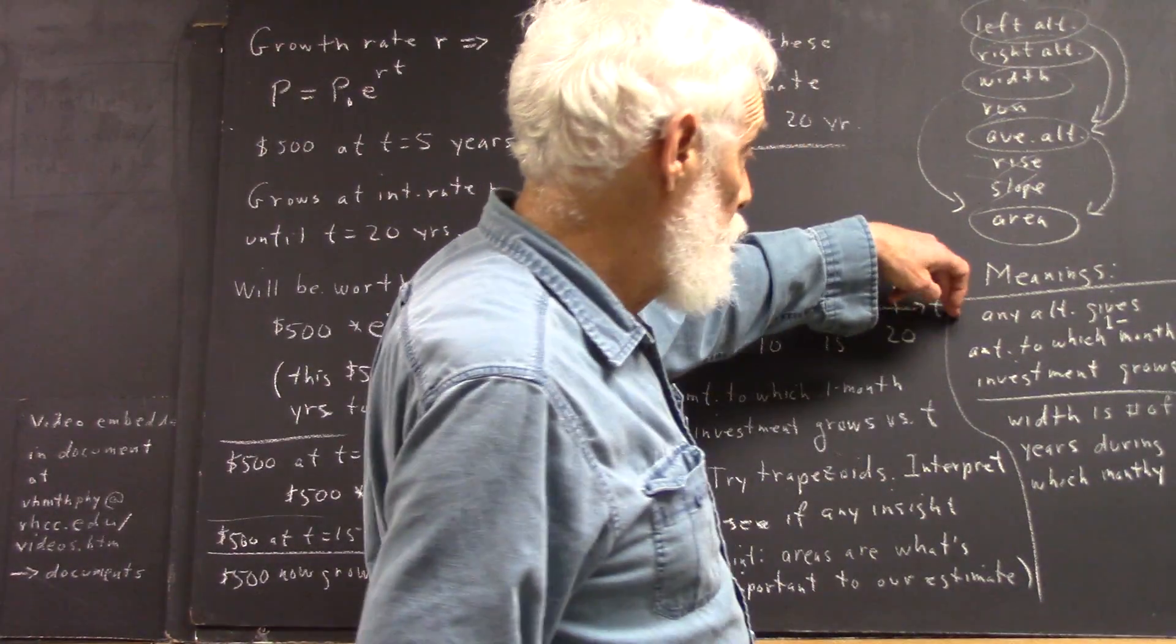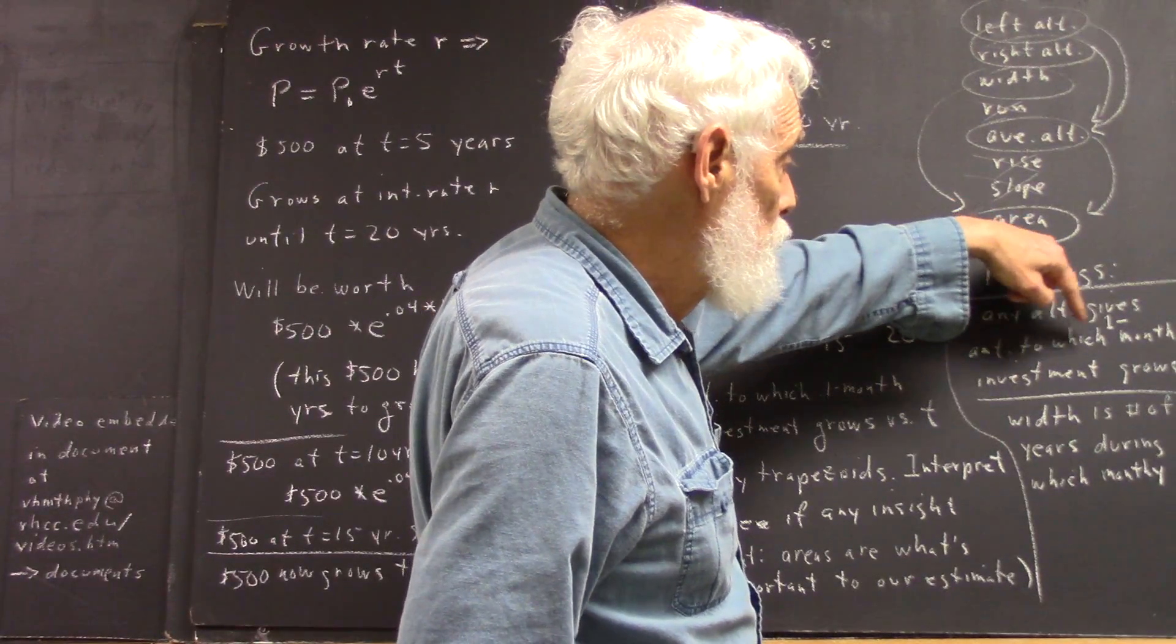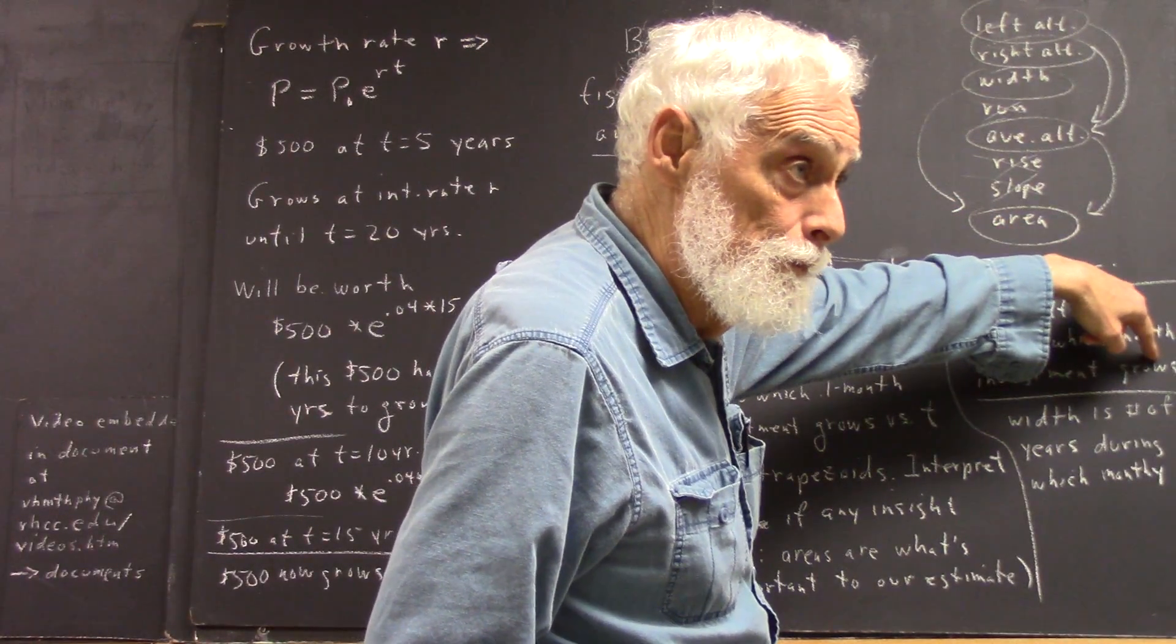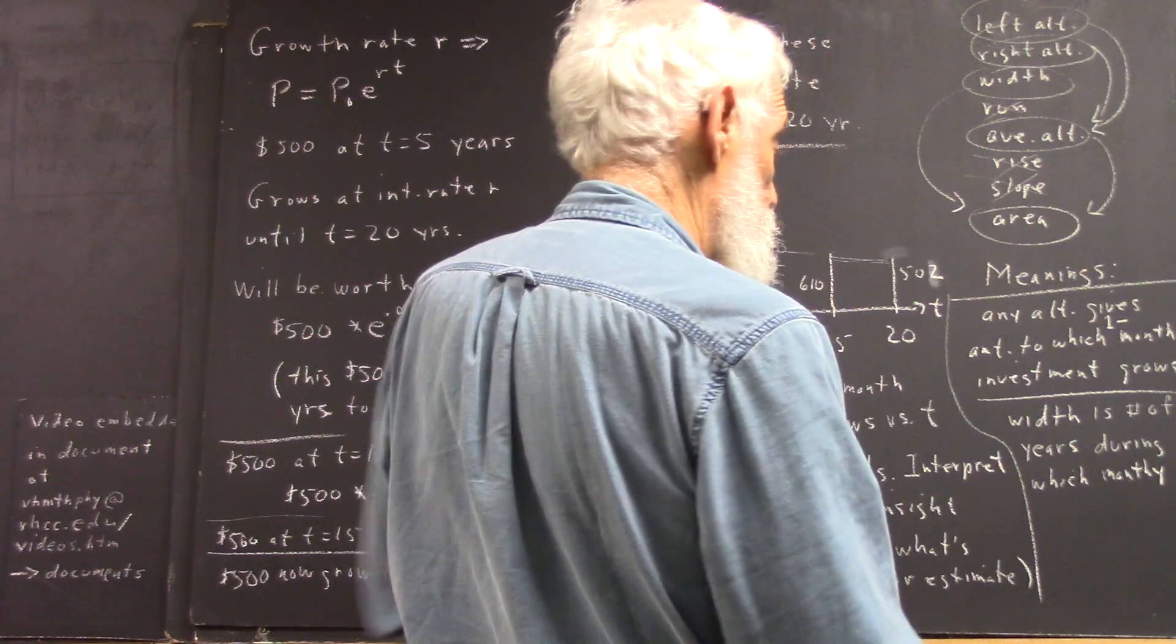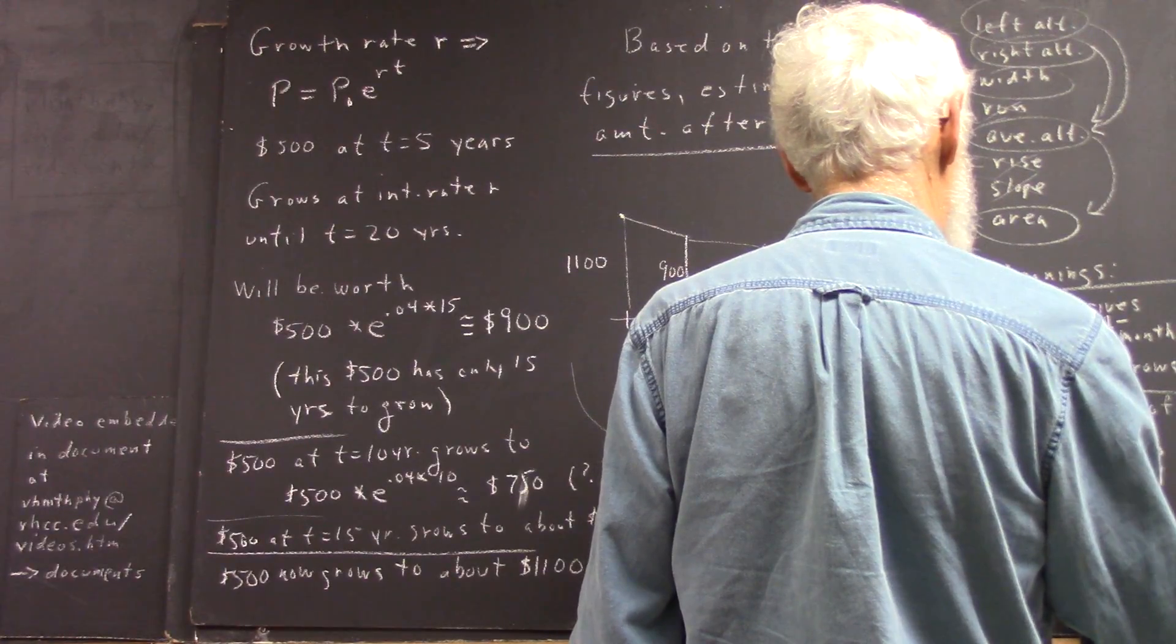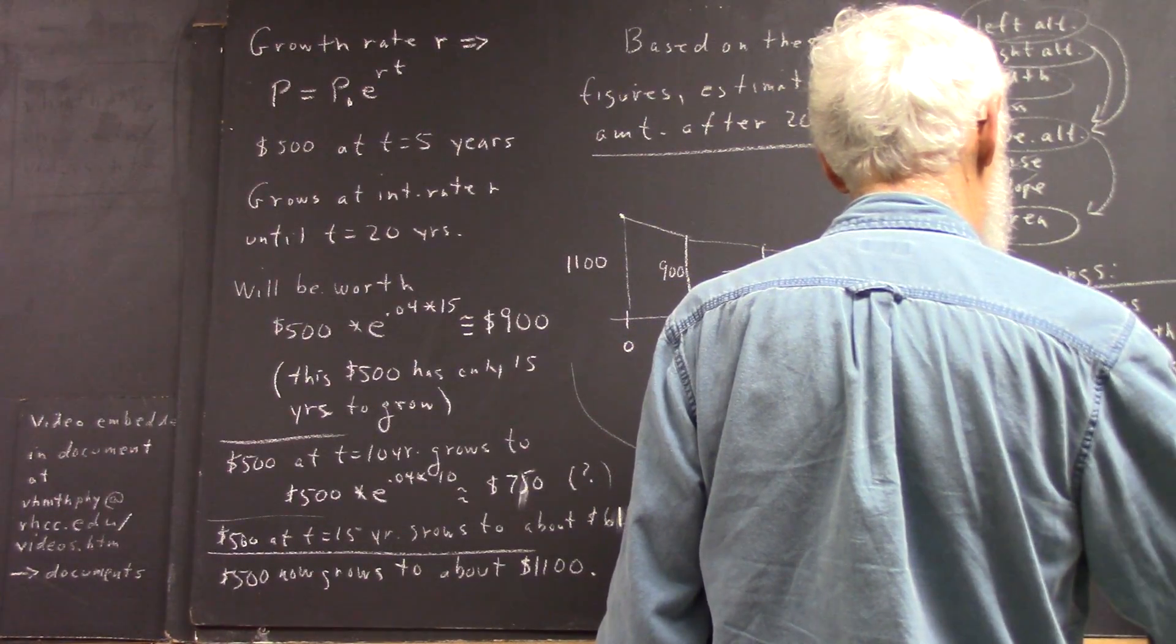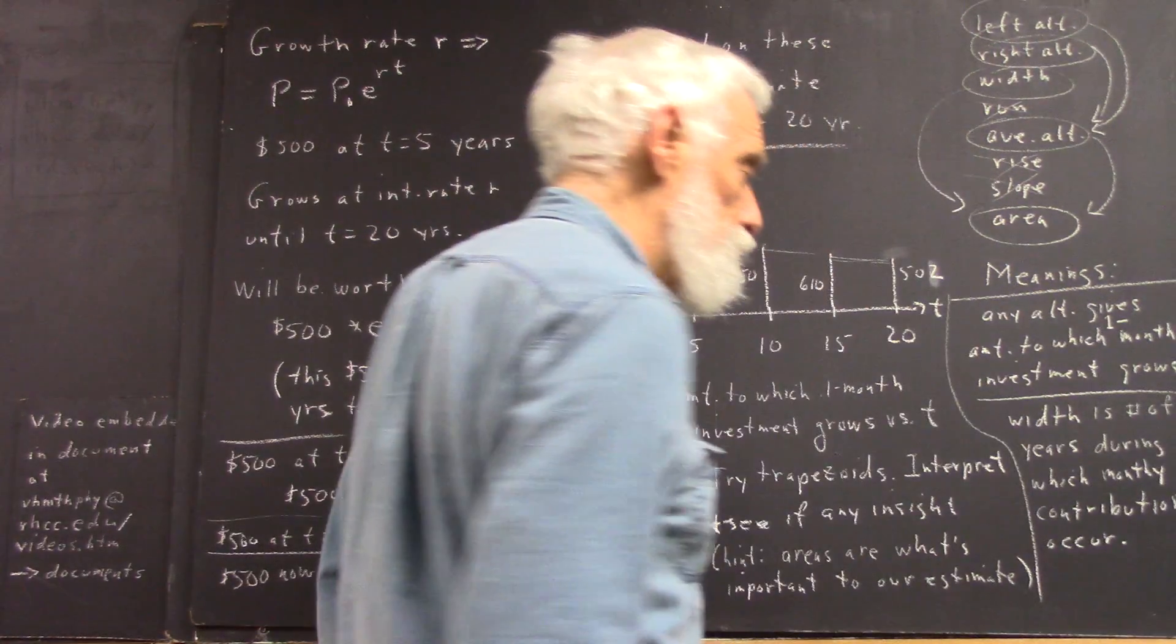Okay, so again, average altitude gives us the amount to which a one month investment grows, and width is a number of years during which the monthly contributions occur.